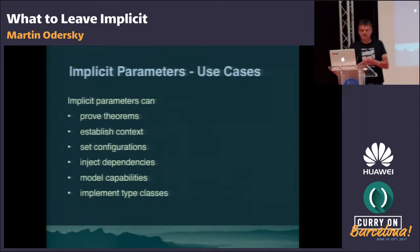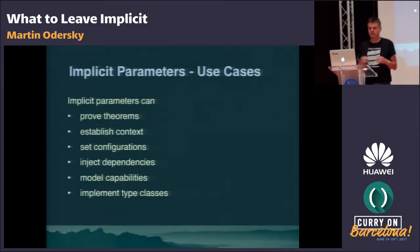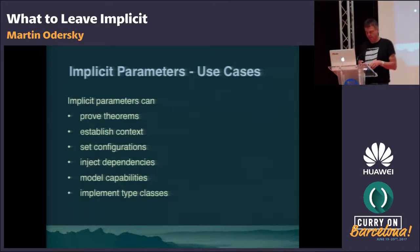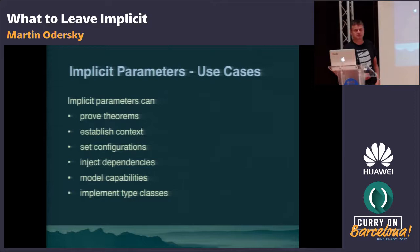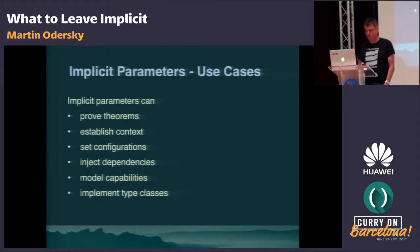Implicit parameters: it's a simple thing. You can mark a parameter implicit, and if you don't give an argument the compiler will provide it for you. But it's quite staggering what you can do with them. Use cases include: proving theorems, establishing contexts, setting configurations, injecting dependencies, modeling capabilities, and implementing type classes as in Haskell or Rust.